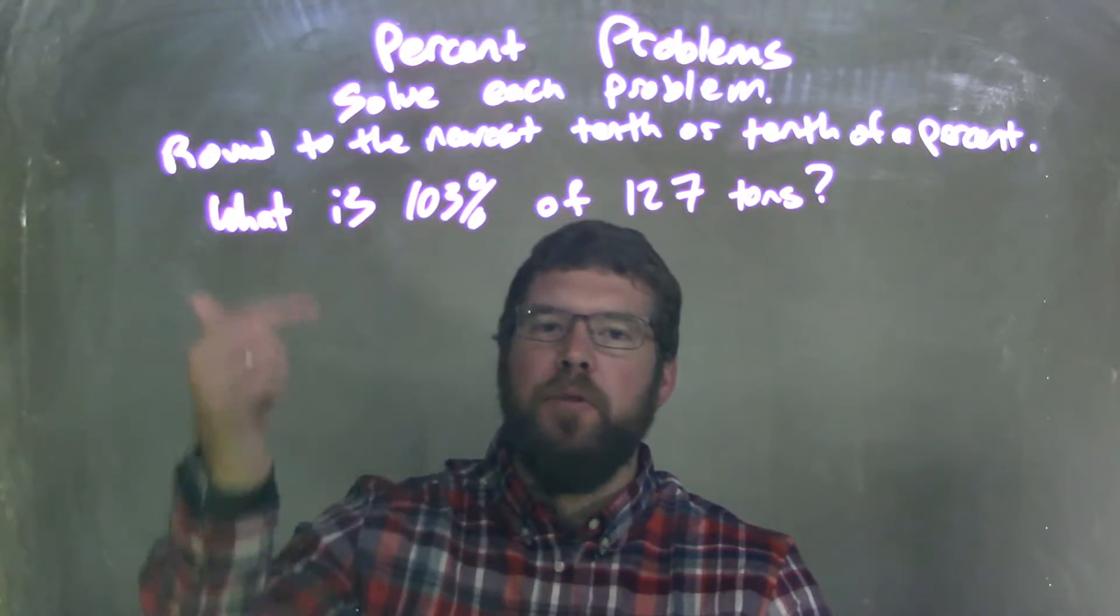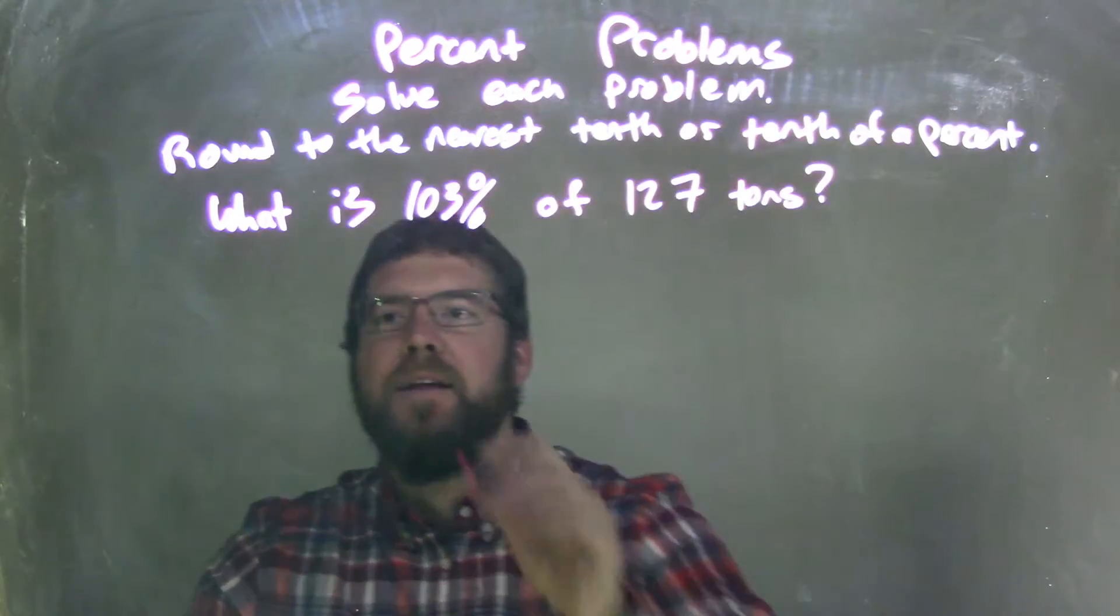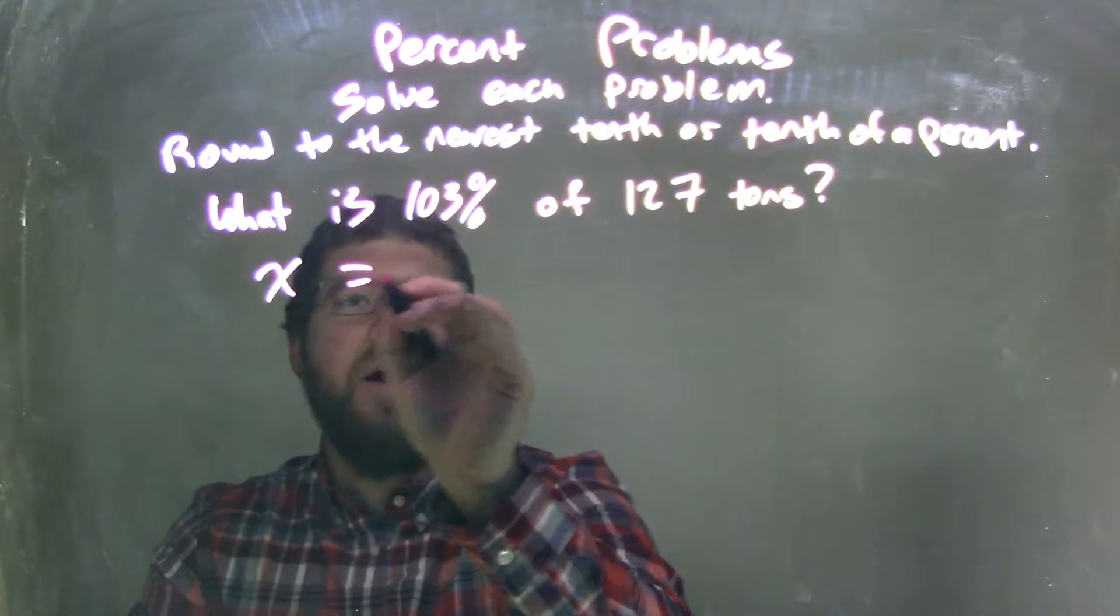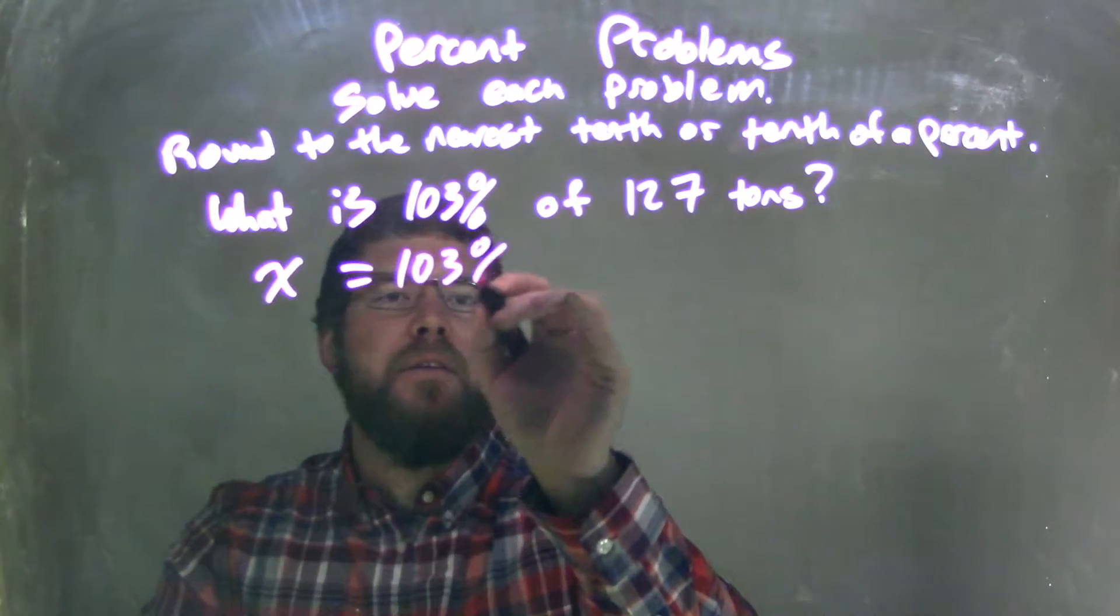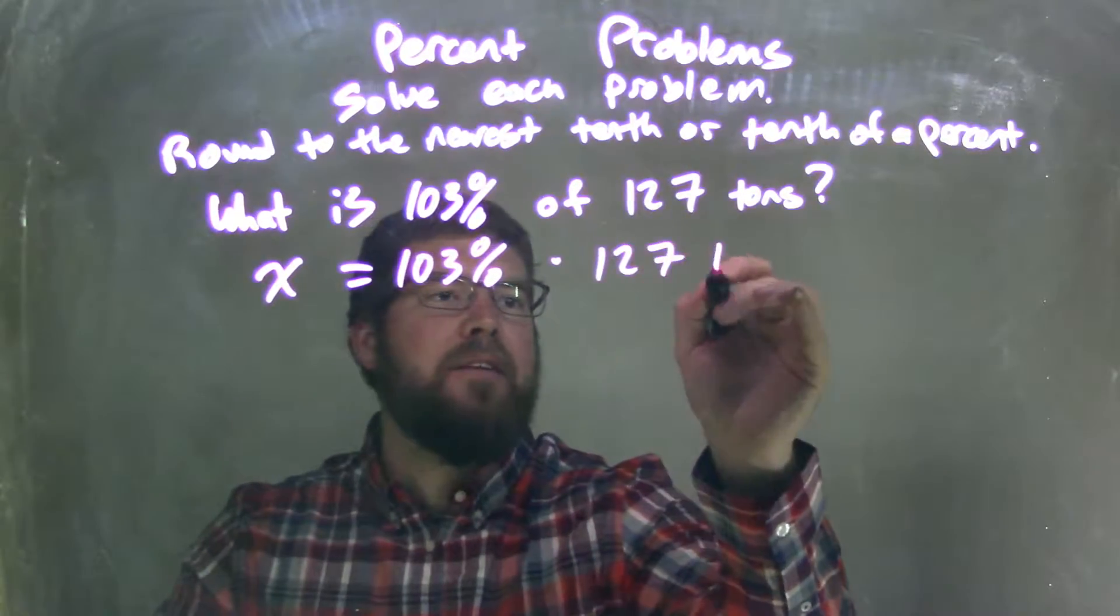I need to first convert that to an equation. So my 'what' is x, equals, 103% of, which is multiplication, 127 tons.